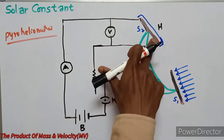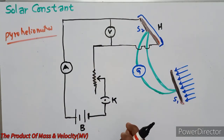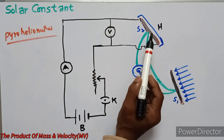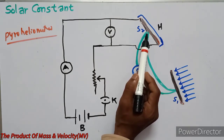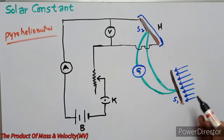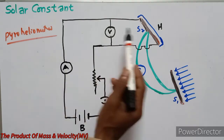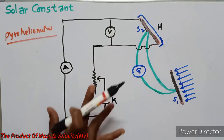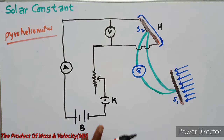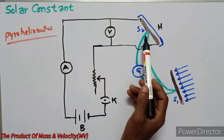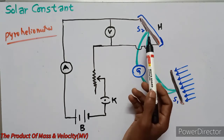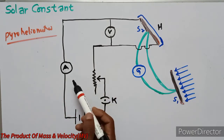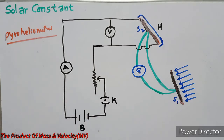The rate at which S2 gains heat can be calculated from the current in the circuit and the potential difference applied. S1 is heated by solar radiation and S2 is heated by the electric circuit. The rate at which S2 gains heat is calculated from the current and the potential difference applied.